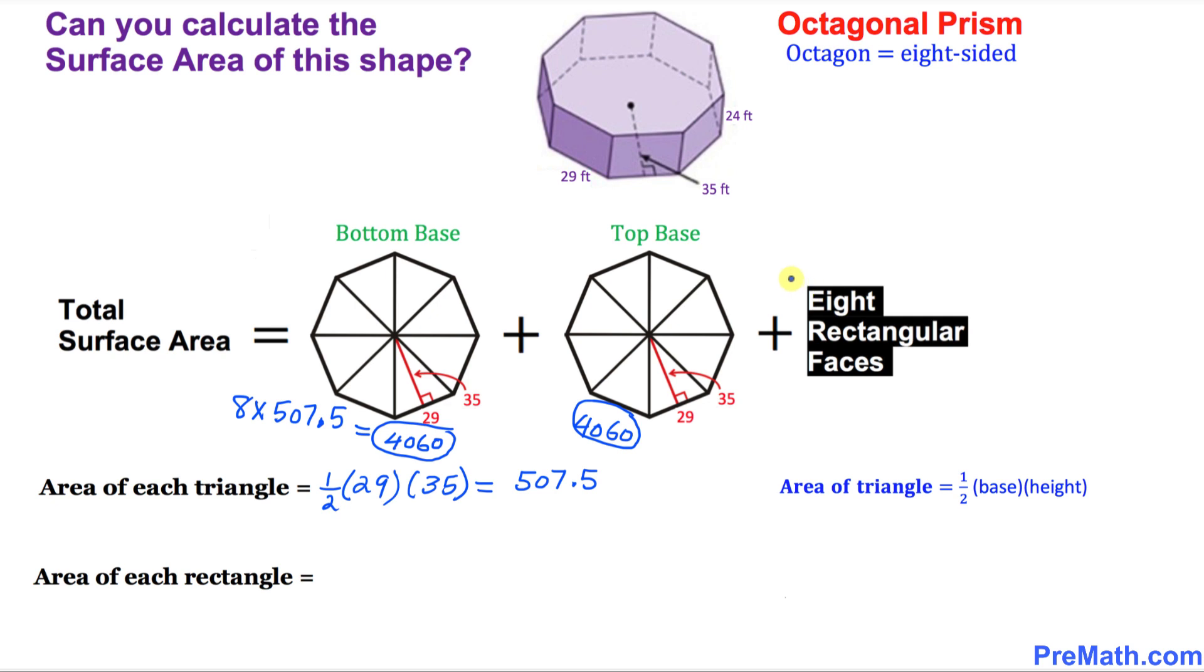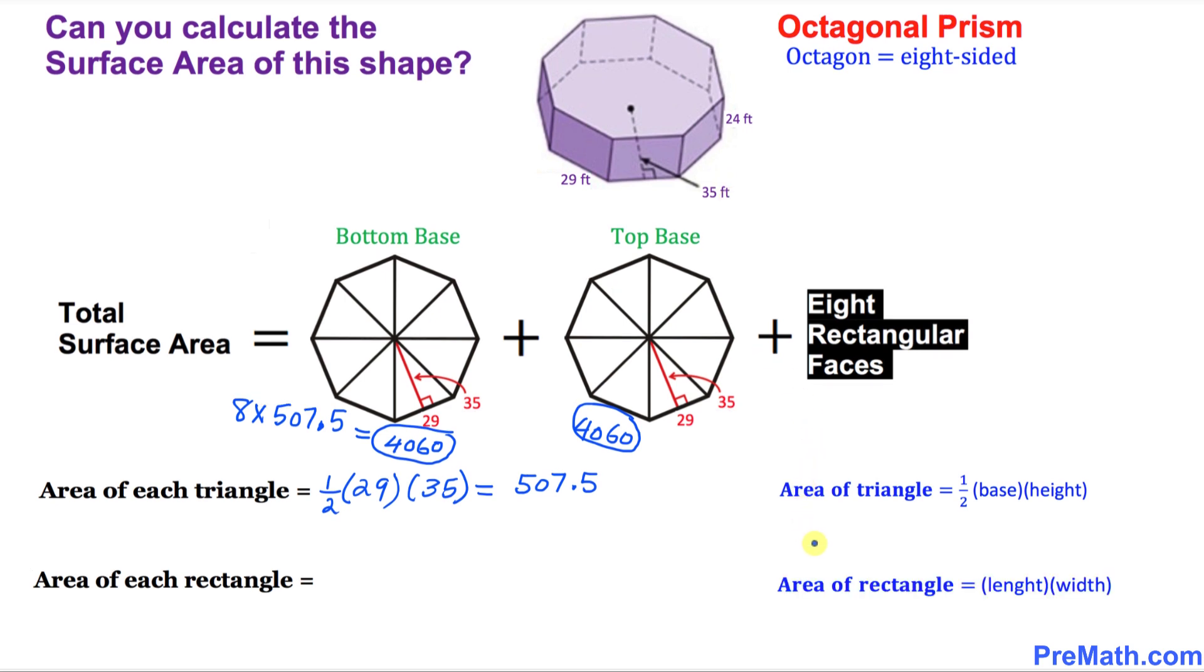And now next, we are going to focus on these eight rectangular faces. You can see this one. We are going to find the area of each rectangle. So you know that the area of a rectangle is always equal to length times width. In our case, our length is 29 and width is 24.